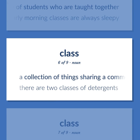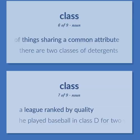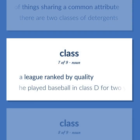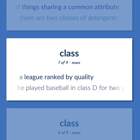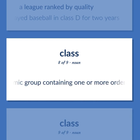A collection of things sharing a common attribute. There are two classes of detergents. A league ranked by quality. He played baseball in class D for two years. Biology: a taxonomic group containing one or more orders.